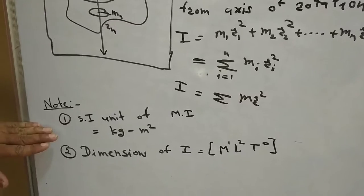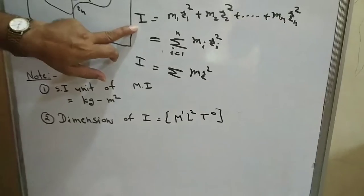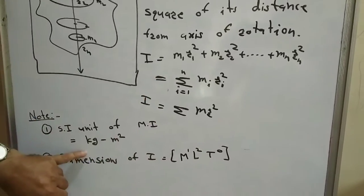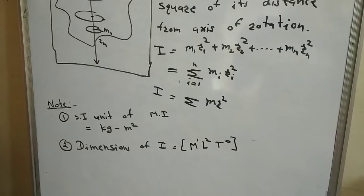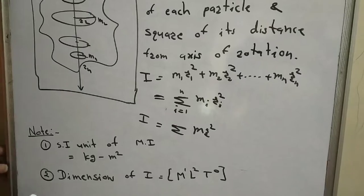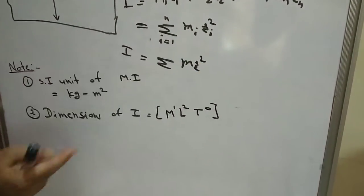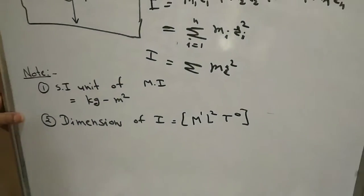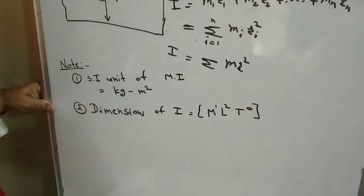The SI unit of moment of inertia: clearly, moment of inertia depends upon two factors — mass and distance. Mass is expressed in kilograms and distance squared in meters squared. So the SI unit of moment of inertia is kilogram·meter² (kg·m²). For dimensions, since I depends on M and distance but not on time (T), the dimensions of moment of inertia are M¹L²T⁰.